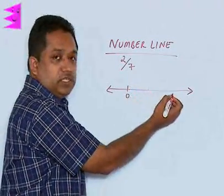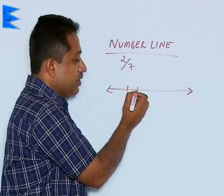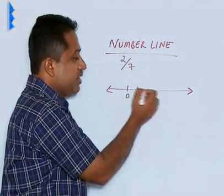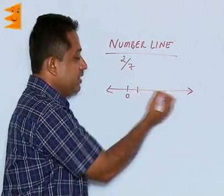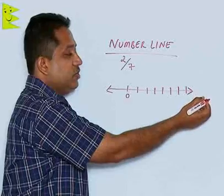Here we have 2 by 7. Now we have equal divisions. This is 1 unit. Whatever is this 1 unit, the same has to be extended equally on the right side. So here 1, 2, 3, 4, 5, 6, 7 equal divisions it goes on.